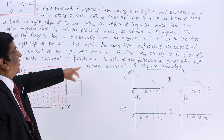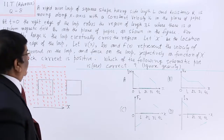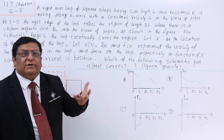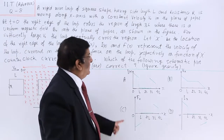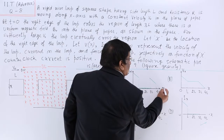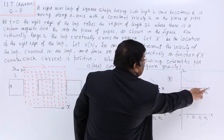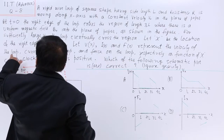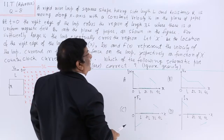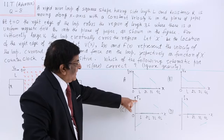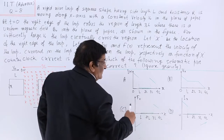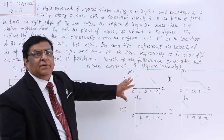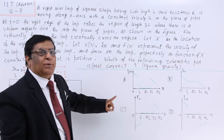Which of the following schematic plots is or are correct? We ignore gravity. There are 4 graphs given and we have to find out which is correct. The first graph is current I versus distance, the second is voltage versus distance, Vx represents velocity of the loop, and Fx is the force on the loop. We have to check all 4 graphs and find out which are possible and which are not.